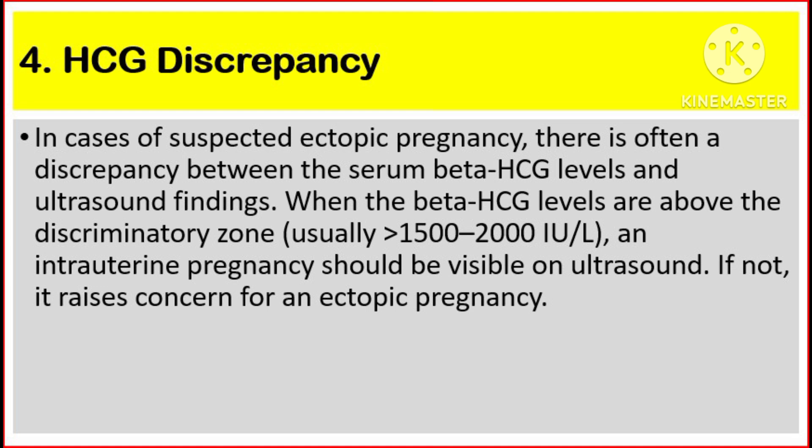Number four, human chorionic gonadotropin discrepancy. In cases of suspected ectopic pregnancy, there is often a discrepancy between the serum beta-HCG levels and ultrasound findings. When the beta-HCG levels are above the discriminatory zone — which is above 1,500 to 2,000 international units per liter — an intrauterine pregnancy should be visible on ultrasound. If not, it raises concern for an ectopic pregnancy.